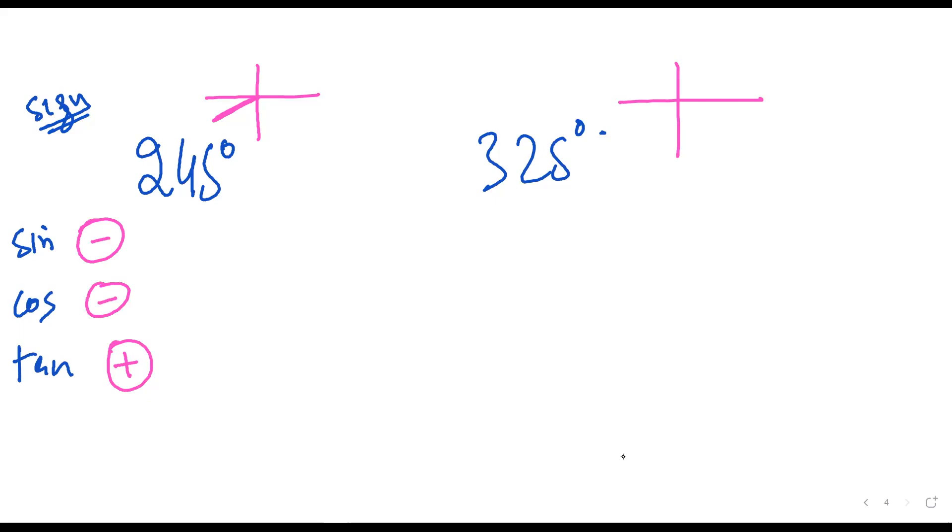It's pretty easy. Let's do 325 degrees. In which quadrant? Fourth quadrant. So only one would be positive—cos. Only cos would be positive; the rest would be negative.